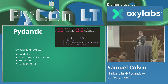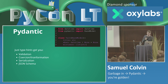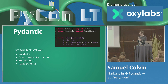You get validation, you get coercion or transformation. So if you pass bytes into the title field, Pydantic will take care of converting that to a string. Similarly, if you pass a string to an int field, it'll take care of converting that. You also get serialization — a bunch of logic for turning this back into a dictionary or into JSON, including filtering as you do that.